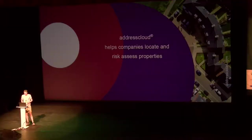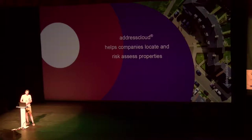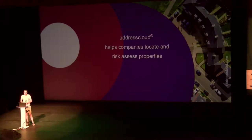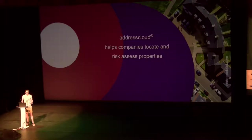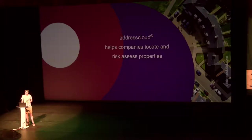Really briefly in one slide: AddressCloud provides geocoding and risk intelligence for businesses around the world, primarily in the financial sector. We work with a lot of insurers so that we can tell them how risky a property may be for underwriting purposes. That's one of our key markets, and we also work with commercial markets for deliveries and logistics.